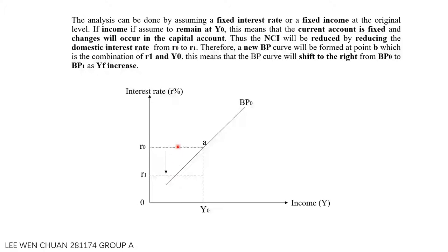Thus, the NCI will be reduced by reducing the domestic interest rate from r0 to r1. Therefore, a new BP curve will form at Point B, which is the combination of r1 and Y0. This means that the BP curve will shift to the right from BP0 to BP1 as foreign income increases.